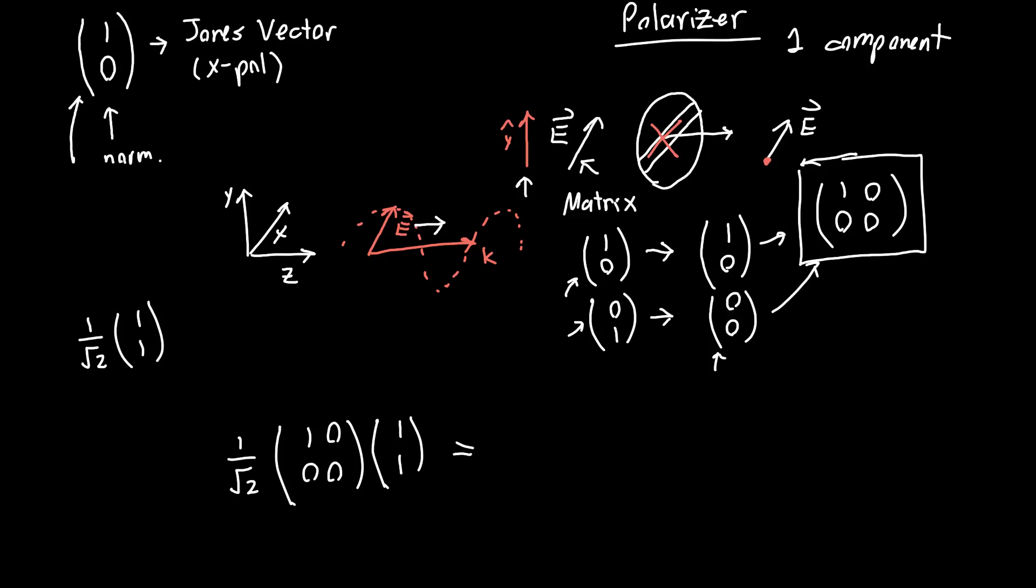All we need to do is act on that with our polarizer matrix. So [[1,0],[0,0]] times (1,1), with 1/√2 out front, gives us 1/√2 (1,0). This is just what we would expect. It passed the x component straight through and completely removed the y component, leaving the amplitude of the x component unchanged and completely destroying the y component.